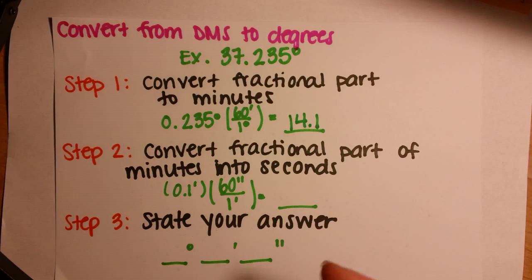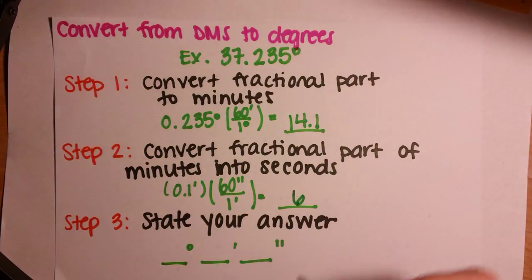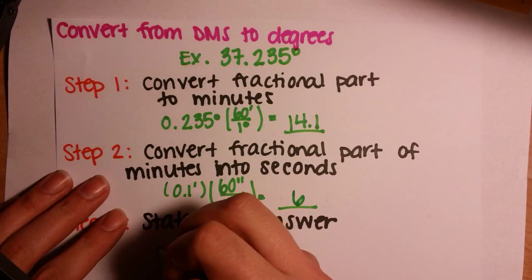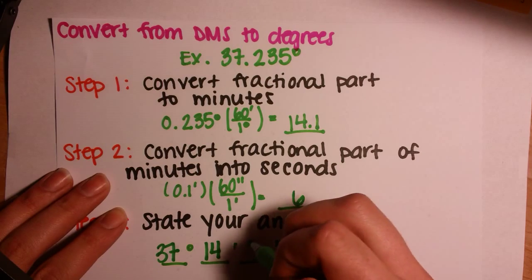Then you're going to convert the fractional part of the minutes, which is the 14.1, into seconds. So you take the fractional part, 0.1 minutes, multiply by 60 seconds over 1 minute, and you'll be left with 6. So to write our final answer, we'll have 37 degrees, 14 minutes, and 6 seconds.